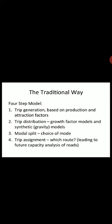Trip distribution connects trip ends without specifying the actual route and the travel mode, to form a trip matrix between known origins and destinations. This includes growth factor models and gravity models. The third step is modal split, which is the choice of mode — trips may be made by different modes of travel.